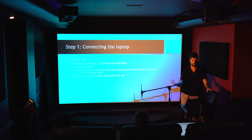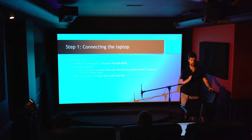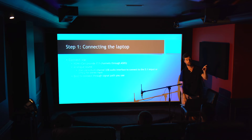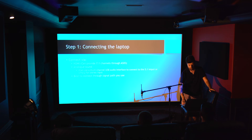Using HDMI you can get the full 7.1 and send discrete to each channel. You can also do it through analog sound — I've done it through the headphone output, through a sound card or audio interface. If your surround processor has a 5.1 input, you can do it through that too. Ideally, use the signal path you're actually listening through, because sometimes the receiver modifies the signal and you want to capture that.